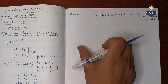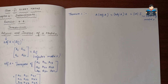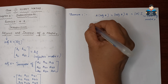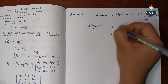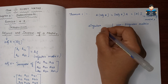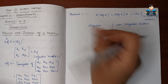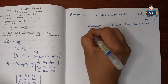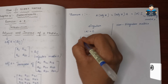The adjoint of A leads us to the concepts of singular matrix and non-singular matrix. A singular matrix is a square matrix where the determinant of A is equal to 0.